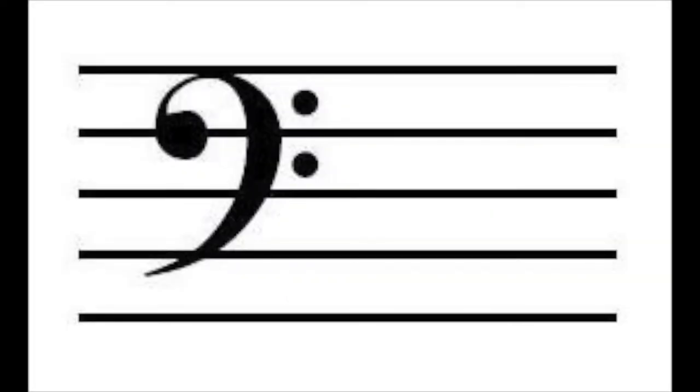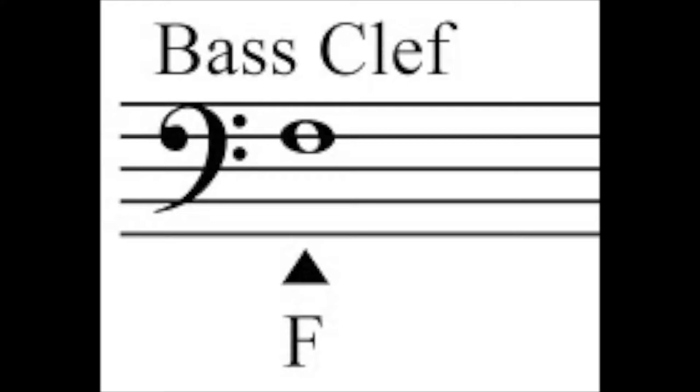From the treble staff, we have the bass staff. The bass staff is also represented by the letter F — it's wrapped around the fourth line of the bass staff, which is the line for letter F. Both the treble staff and bass staff are what we use to represent musical notation.